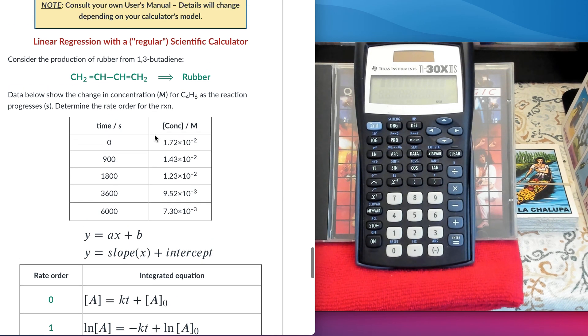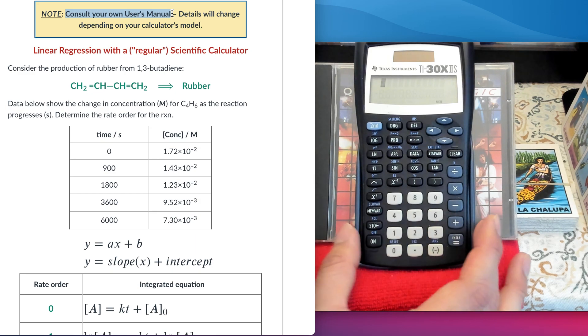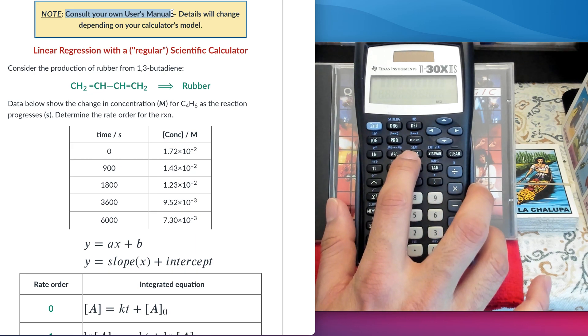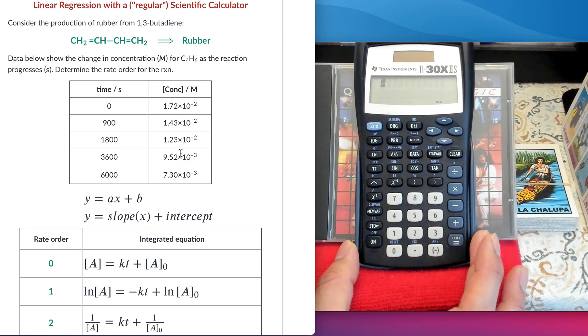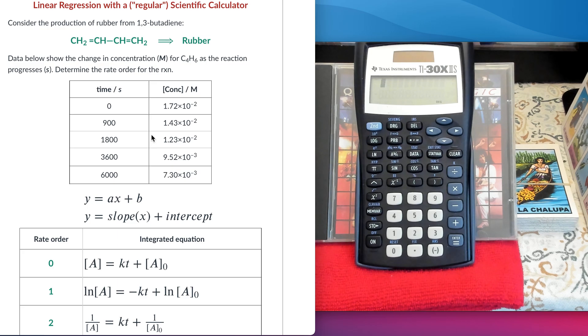The only thing that I want to remind you is that every single model has its own way to deal with how to enter data and retrieve parameters of the calculation. Make sure that you consult with your user's manual because all the details are going to be dependent on what exact model of calculator you have. The main idea here is that your calculator should have this statistics mode. Make sure that you have the two variables statistics mode because you're going to enter values in the X, Y fashion.